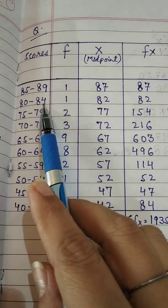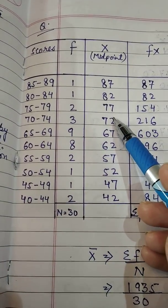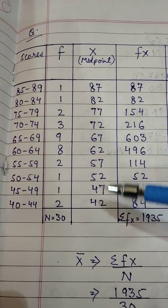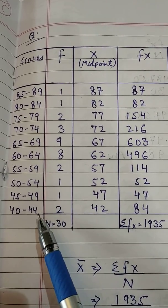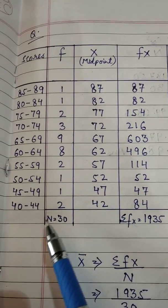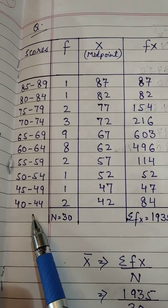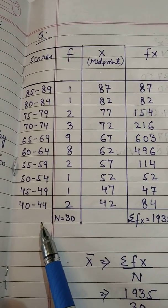In same perspective, 80 se 84 ka 82 aagya. 75 se 79 ka 77 aagya. Is tariqe se aap saare class interval ke beech ka midpoint. Midpoint kaise nikalate hai? Aap in doonho values ko add karke divided by 2 kar dhekhe. Either aap haat se hi calculate kar lenge. Yaha joh mid value hai, wohi aapka midpoint ho jayega.